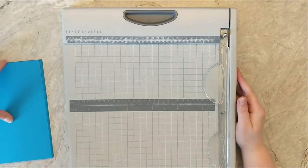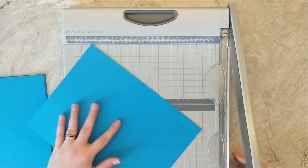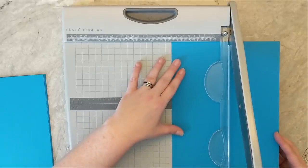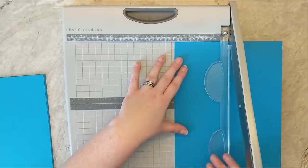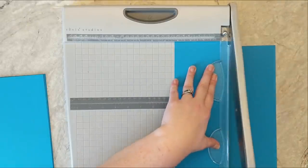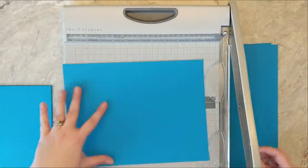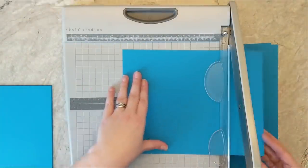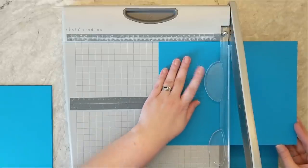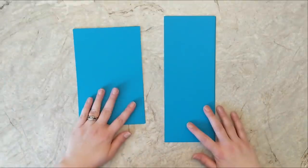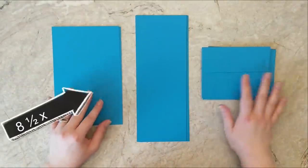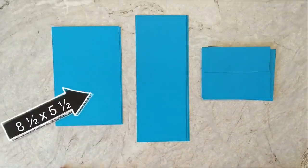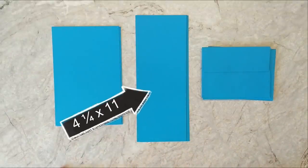I'm going to start cutting this cardstock down to create some A2 size card bases. There are two ways that we can cut these. The first way is by creating a top folding note card by putting your paper in the trimmer across the 8.5 inch side and slicing at 4.25 inches. The second way is to put your paper in across the 11 inch side and slice it 5.5 inches. One measures 8.5 by 5.5 inches and the other measures 4.25 by 11.